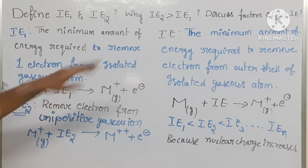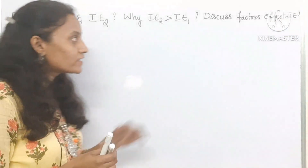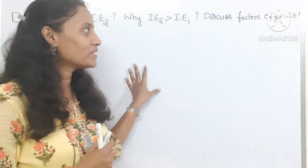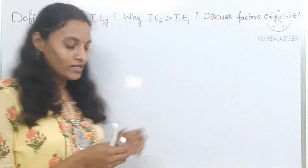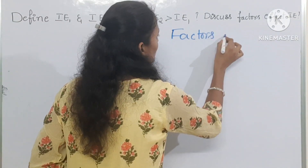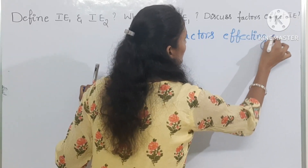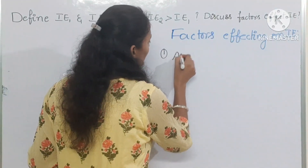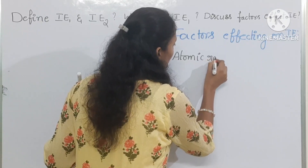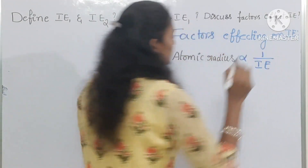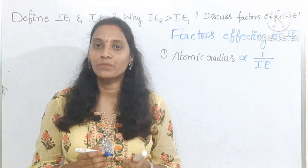Now let us discuss the factors affecting IE. The first factor is atomic radius. Atomic radius is inversely proportional to the ionization enthalpy. Because if the size increases, the distance between the nucleus and the outer shell increases, so the force of attraction on the electron in the outer shell decreases. That is why less energy is needed to remove one electron — larger atomic radius means lower IE.